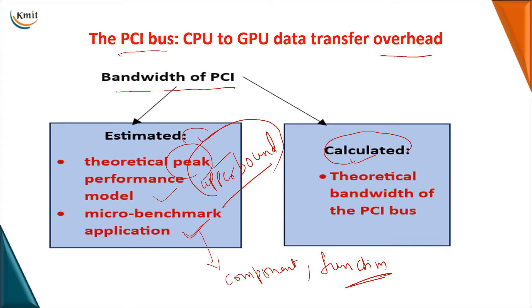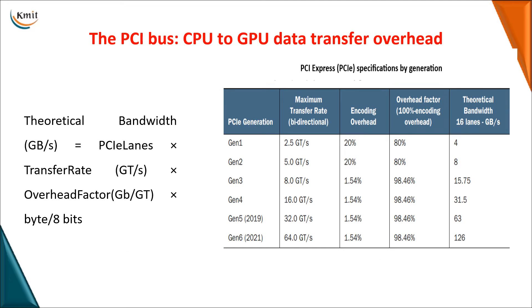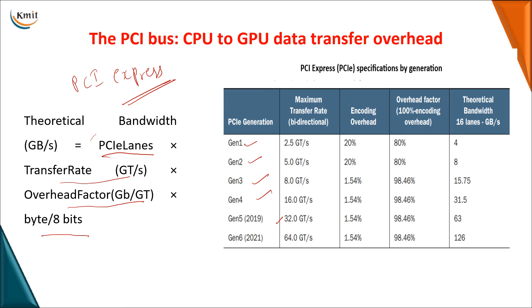For calculating the actual bandwidth of your PCI bus, we use PCIe length multiplied by the transfer rate and overhead factor, converting the total value into bytes from bits. PCIe stands for peripheral component interface express, which is the latest version of the interconnect used for connecting CPU and GPU. For each PCIe generation there is a different overhead factor and maximum transfer rate. You substitute these values from the generation table to calculate the theoretical bandwidth based on the number of lanes.